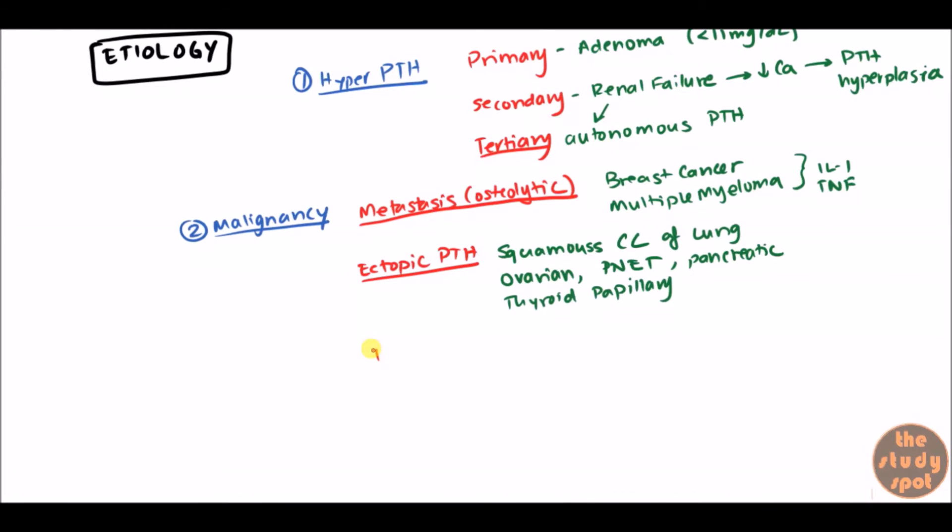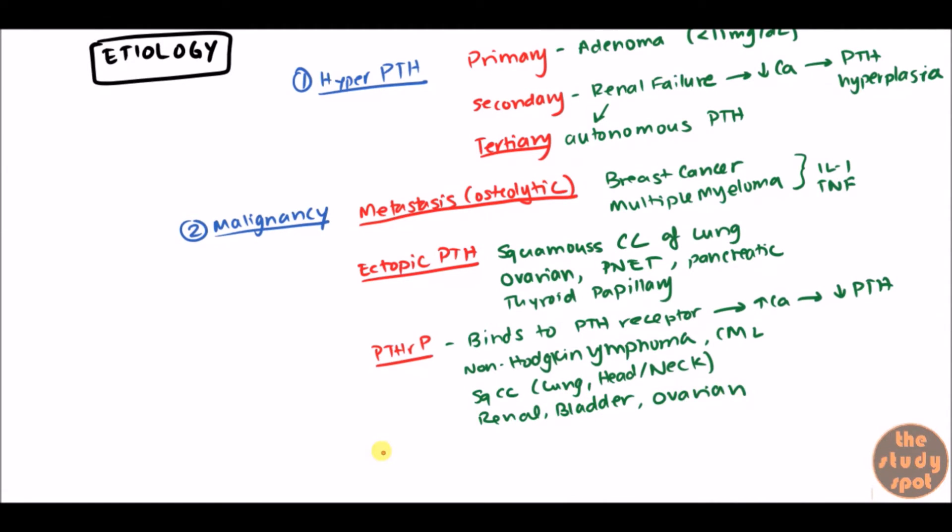Now, besides ectopic PTH, there is another peptide which is called the parathyroid hormone related peptide. And parathyroid hormone related peptide binds to the PTH receptor activating it which will then increase calcium and then that will decrease the PTH. So this is not PTH in of itself. It's just related to it binding to that PTH receptor. Common tumors that can cause this is going to be primarily your non-Hodgkin's lymphoma and CML which is going to be a lymphoma and a leukemia. Squamous cell carcinomas of the lung, head and neck. Renal carcinoma. You also have bladder carcinoma and ovarian carcinoma. So a few tumors that can release this parathyroid hormone related peptide.